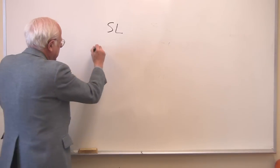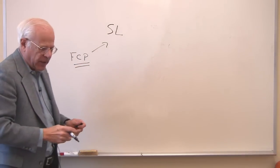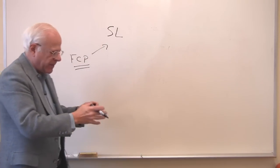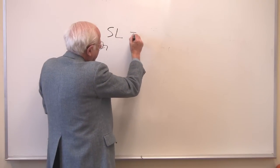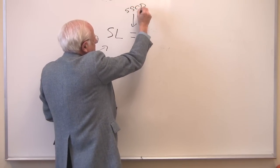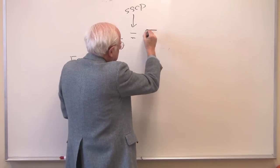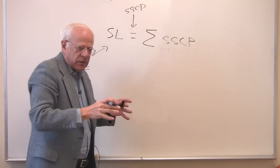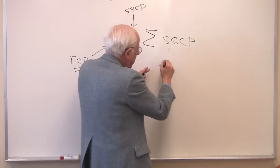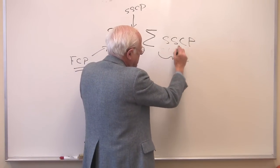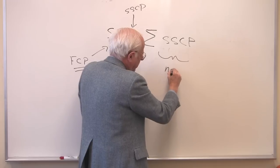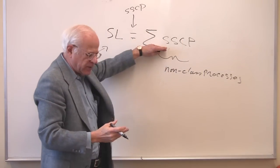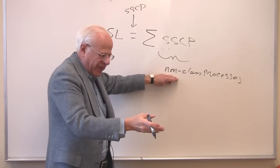The fundamental class process is a single process in which individuals do necessary labor — the yield of that is their consumption — and they do labor above that, the surplus, which is received by another group. Then that surplus has to be distributed — that's the subsumed class process, the distribution of it — to support, using sigma to denote the sum of all expenditures, the subsumed class payments. These go to the subsumed classes who provide the conditions of existence of the fundamental class process. On the right-hand side we have these individuals securing non-class processes, and they get a cut of the surplus to support them.